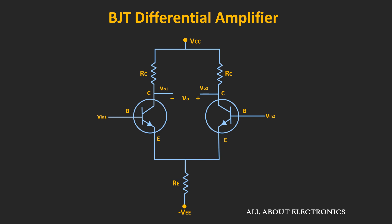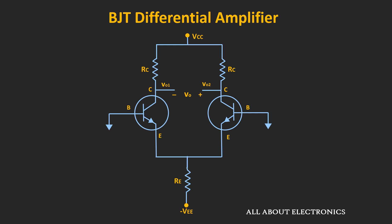During our discussion, we will assume that both transistors are matched perfectly. In this differential amplifier, the input is applied between the base of the two transistors, but for the DC analysis both inputs will act as ground. The current through the emitter resistor is IEE, and since both transistors are matched perfectly, this current IEE will get equally divided between the two transistors — meaning the emitter current of both transistors will be equal to IEE/2.